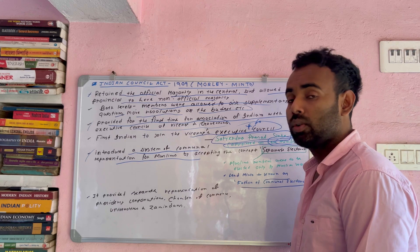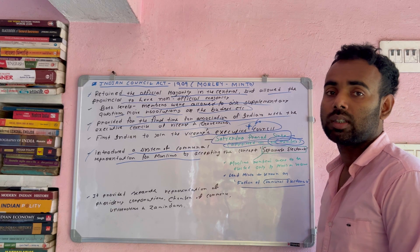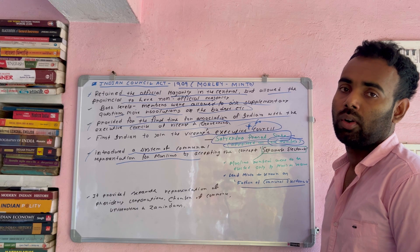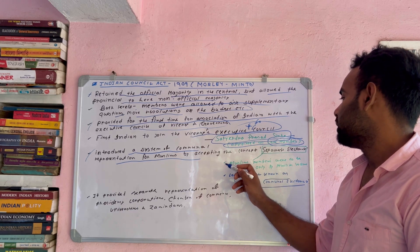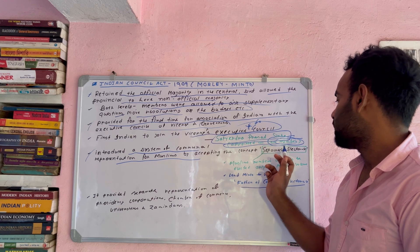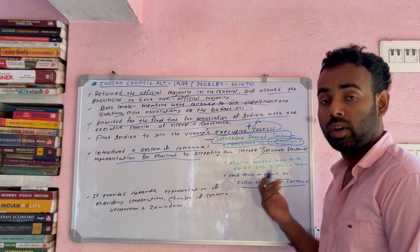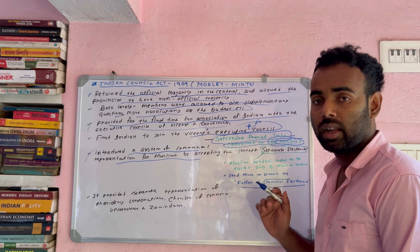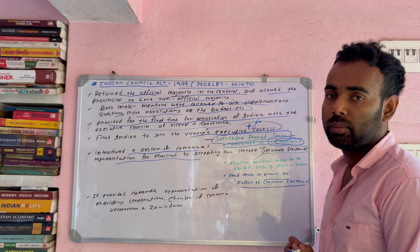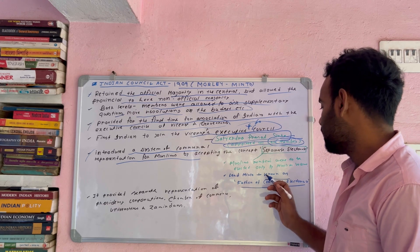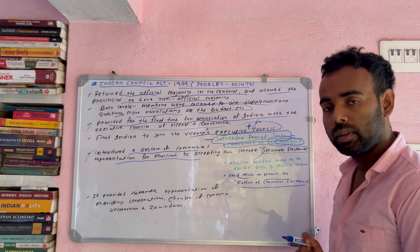Lord Minto said that he was supporting this communal electorate. Which act introduced separate electorates? The Indian Council Act 1909. It was called a communal electorate. That is Lord Minto. This question is very important.